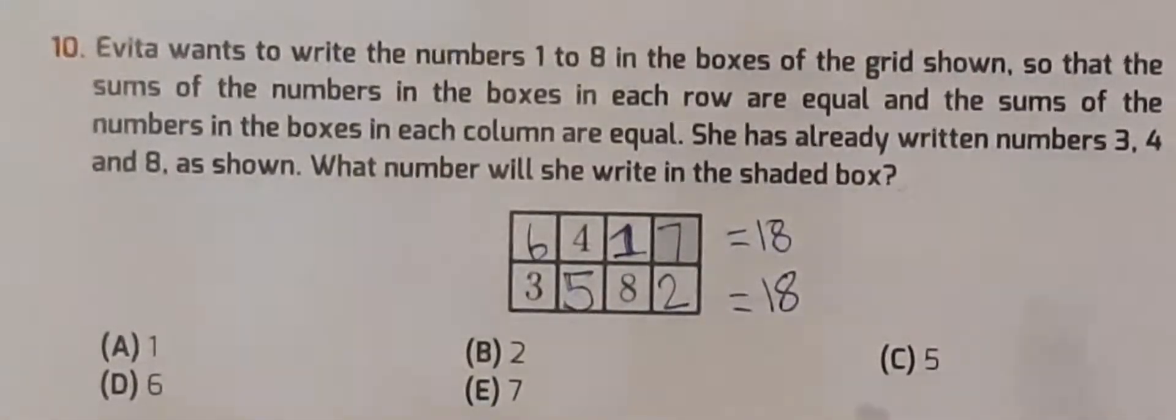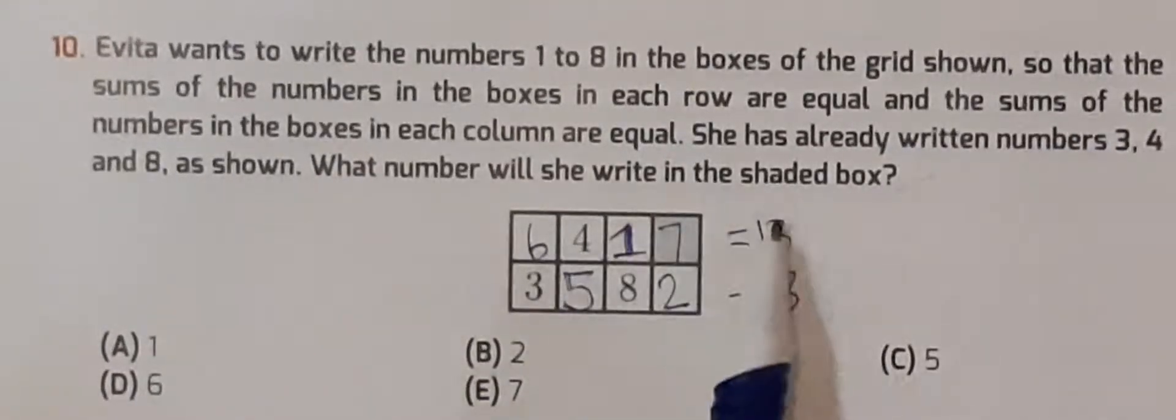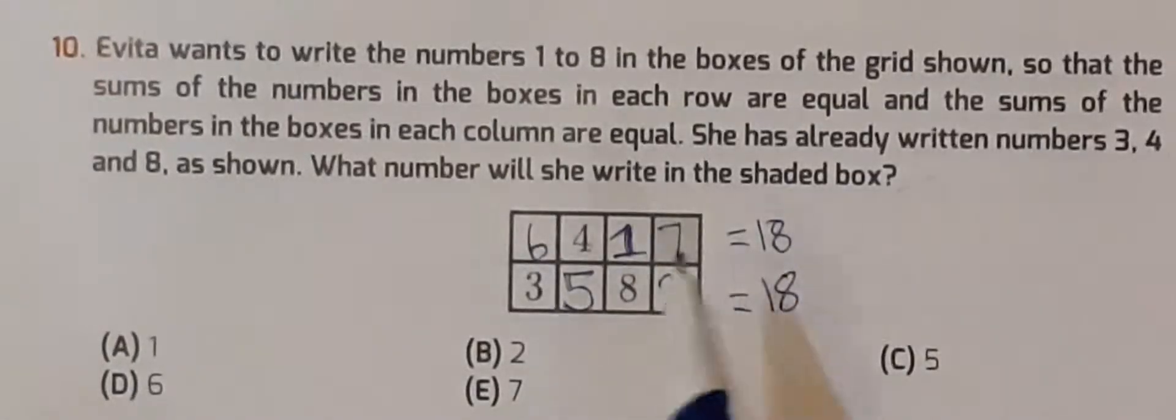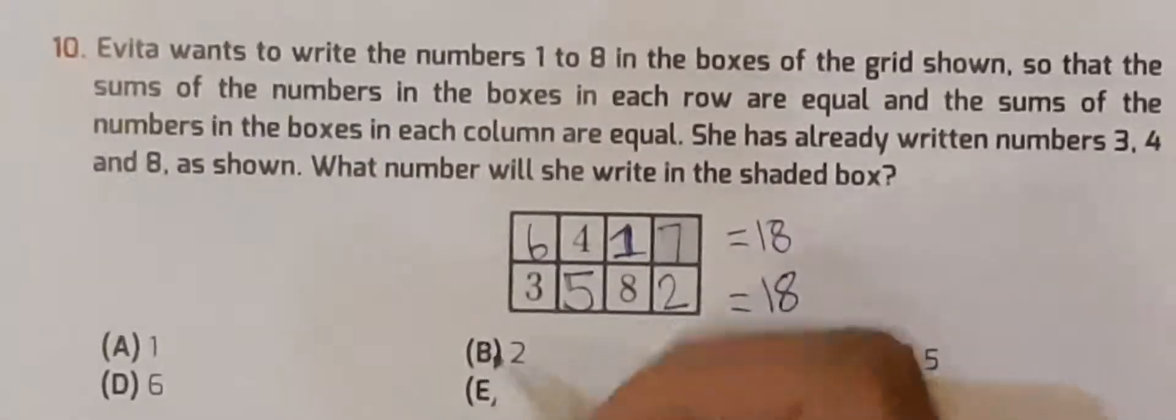So at the end, the question is what number will she write in the shaded box. So in the shaded box we have written 7, it means E part is our answer.